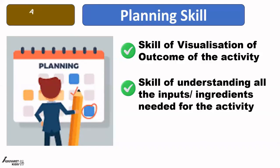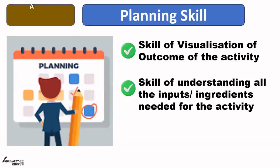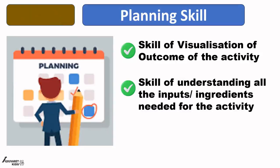The second sub-skill under planning skill is the skill of understanding all the inputs and ingredients needed for that particular activity. This is the skill of understanding: what do I need, what things are required to finish or do this task? It is part of the planning skill. If parents and teachers do not give importance to all the ingredients required for doing a piece of activity — whether big or small — the child's understanding of this will be very important.